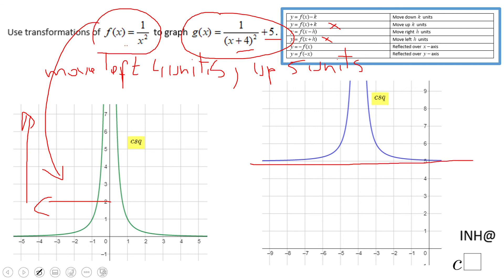And you notice horizontal asymptote moved up five units, the vertical asymptotes move left four units and that's it.